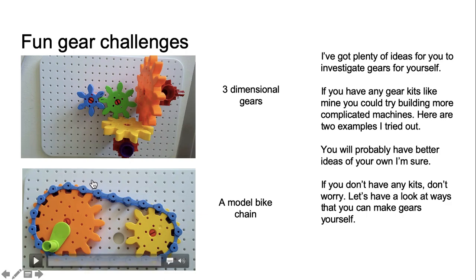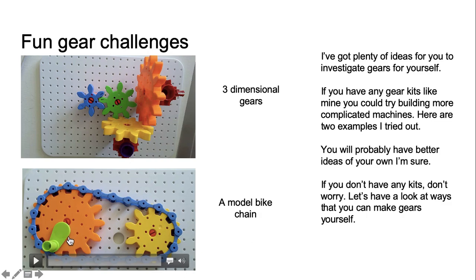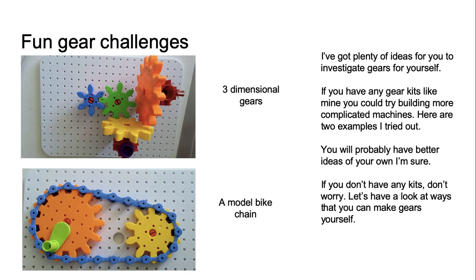In this challenge I've made a model of a bike chain. Just like the chain on Megan's bike there's a big cog at the front with a pedal and a smaller cog at the back. This is the kind of challenge where you could do a proper science investigation — change the size of the cogs, see what happens, and maybe write a report to show to your teacher.